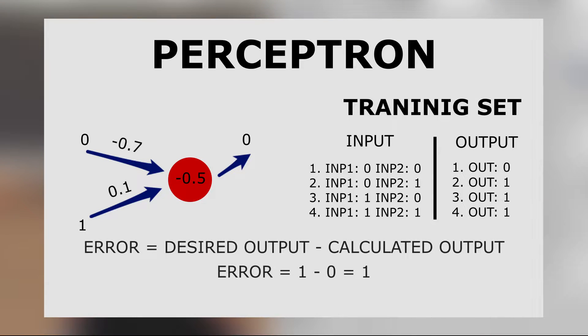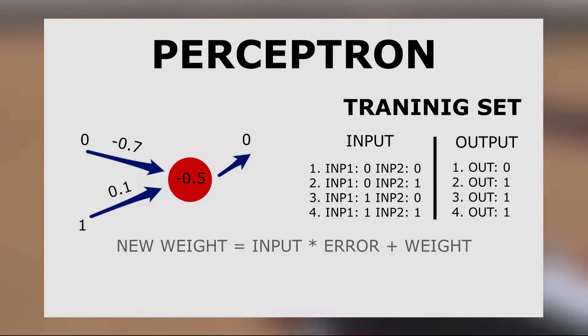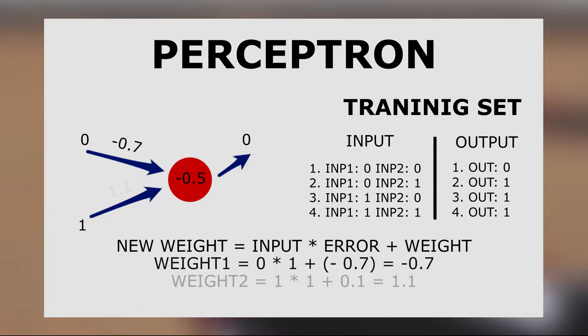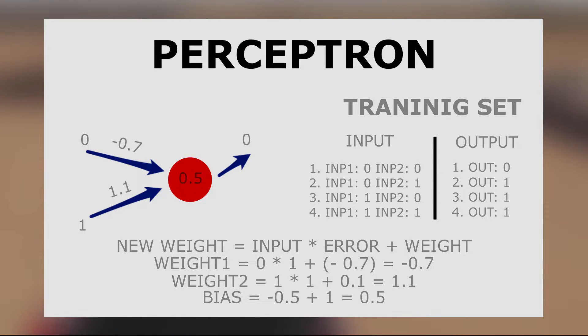First we calculate the error value, which is a difference between the desired output and the calculated output. Next, each input is multiplied by the error and is added to its weight. That way we calculate the new weight value. Bias is calculated just by adding the error value to it.